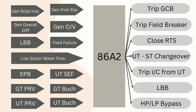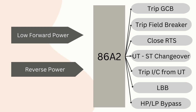Class A2 protection is similar, covering other generator-related protections and a second set of protections. The pressure release valve, buchholz, and standby earth fault of both GT and UTs fall under this scheme. A second set of low forward power and reverse power protection is also provided to increase reliability.